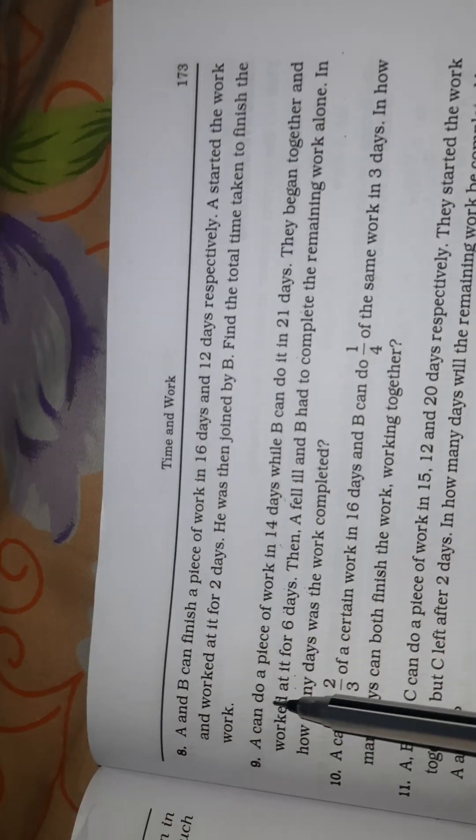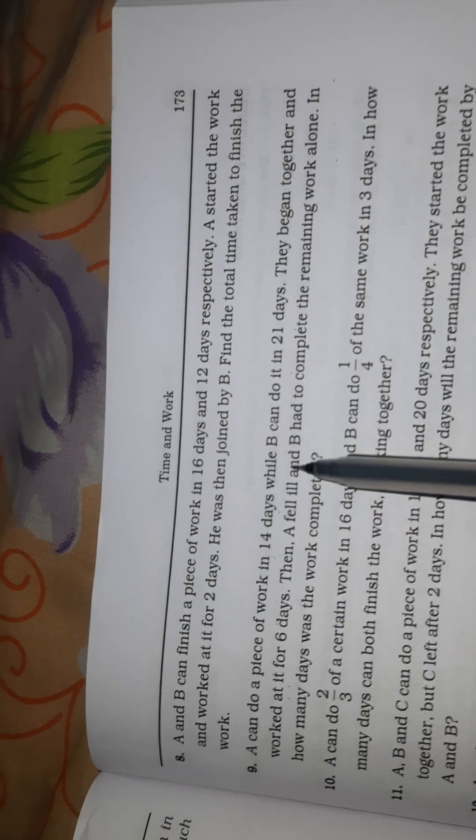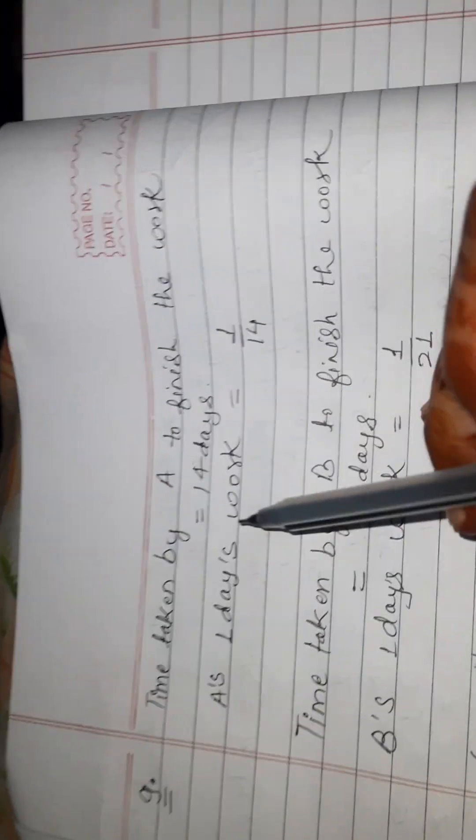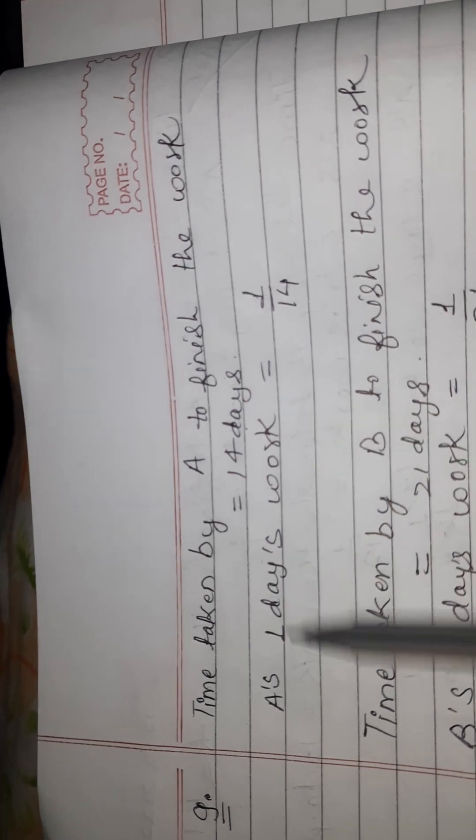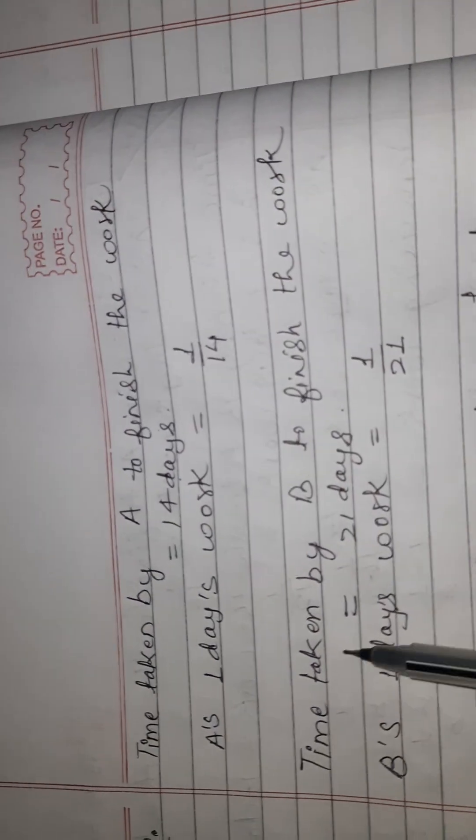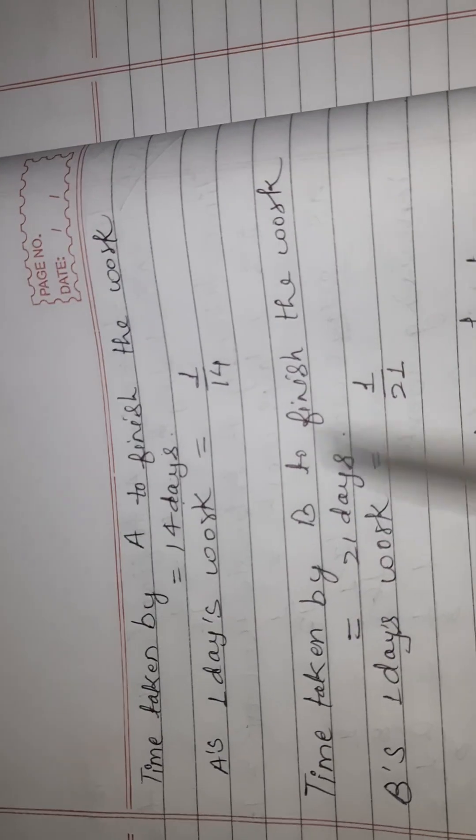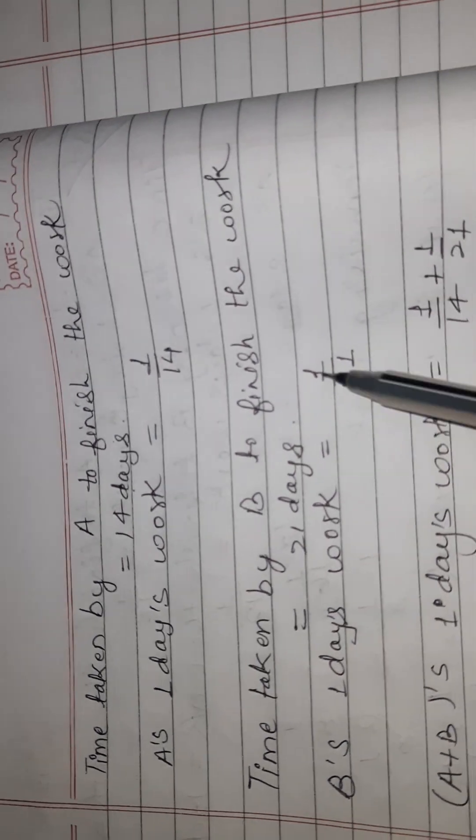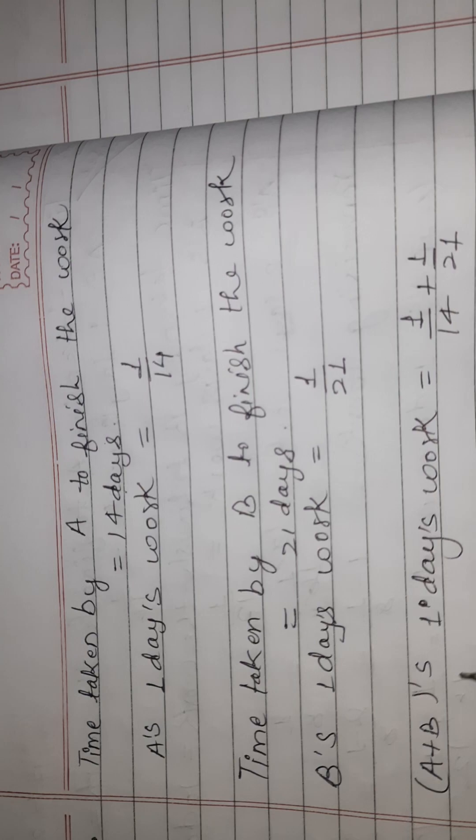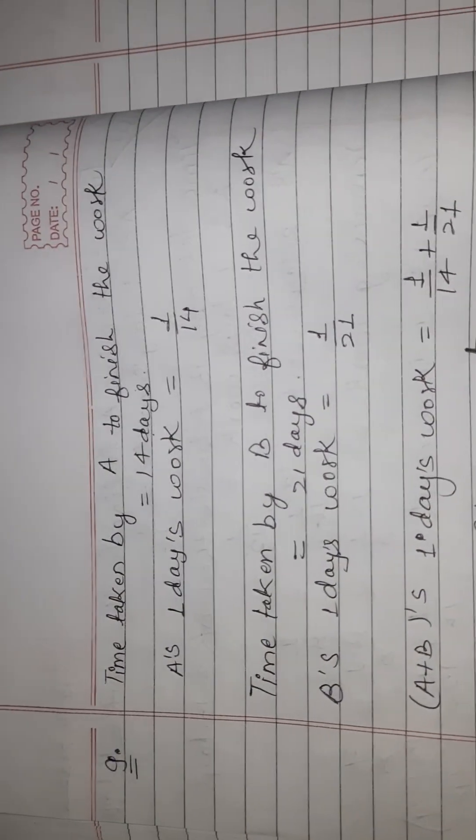First, A can do a piece of work in 14 days while B can do it in 21 days. Means time taken by A to finish the work is equal to 14 days. This is given. Then what we have done here? A's work is equal to 1 upon 14. Next given, time taken by B to finish the work is equal to 21 days. Here we have found B to finish the work of 1 upon 21. Now we have used both A to finish the work of B to finish the work of 1 day. What will happen?